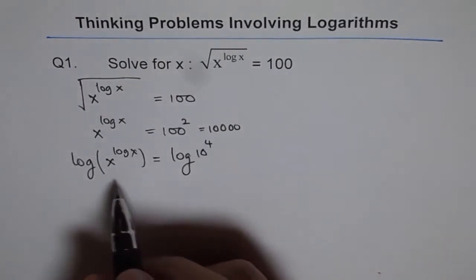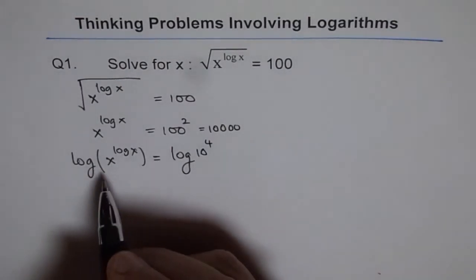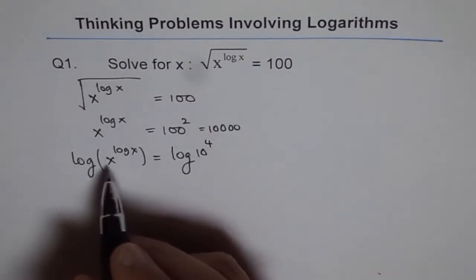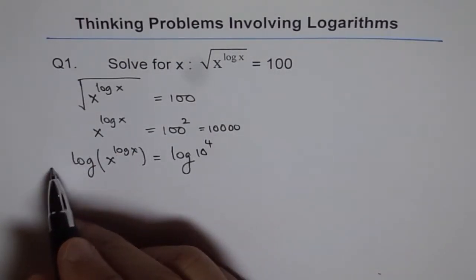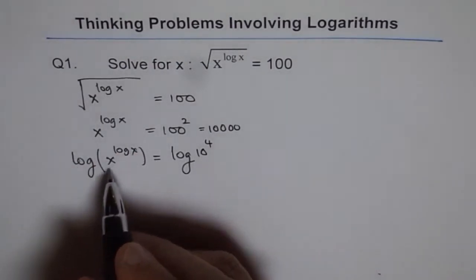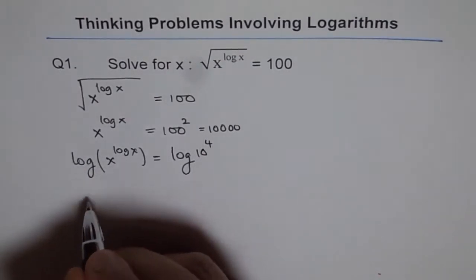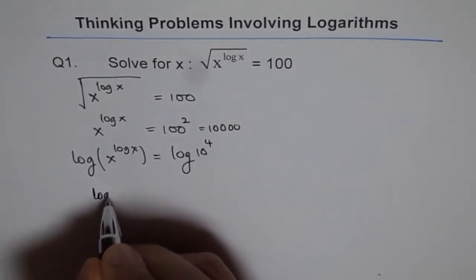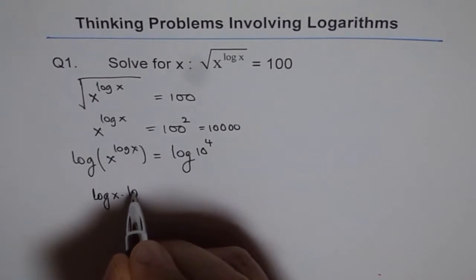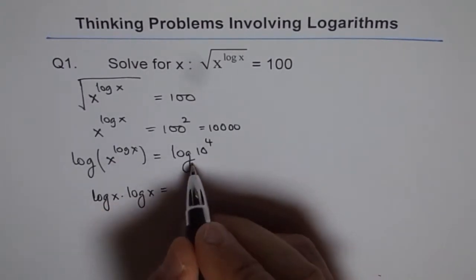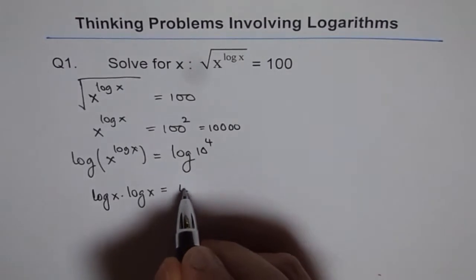Now, when you do log of this, then this becomes log x of log x. Power rule. We'll apply the power rule and we get log x times log x equals to - this is log to the base 10, so this is equal to 4.